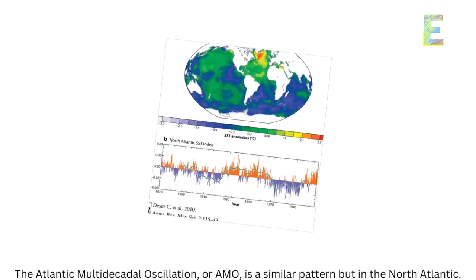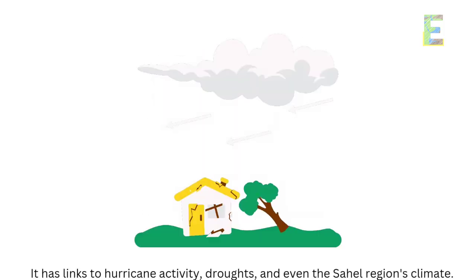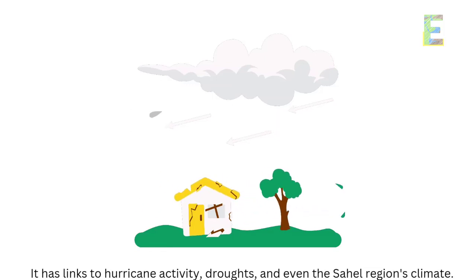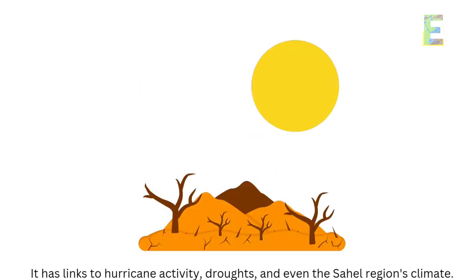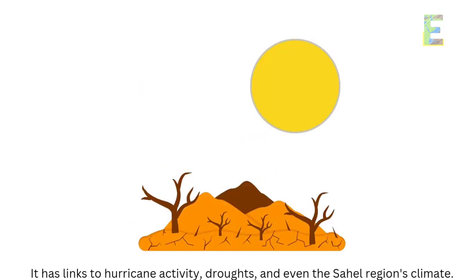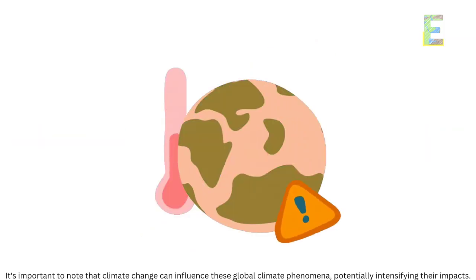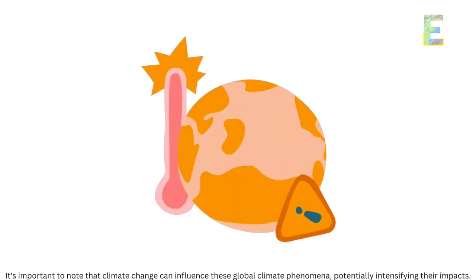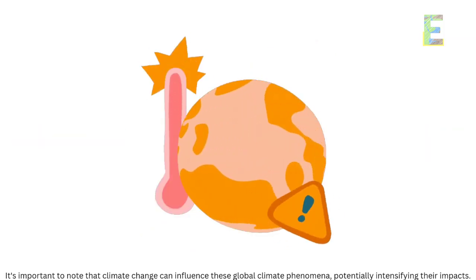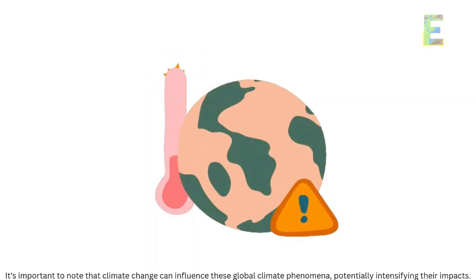The Atlantic Multi-Decadal Oscillation, or AMO, is a similar pattern but in the North Atlantic. It has links to hurricane activity, droughts, and even the Sahel region's climate. It's important to note that climate change can influence these global climate phenomena, potentially intensifying their impacts.